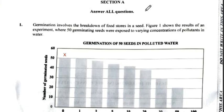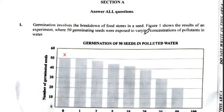In question 1, it says germination involves the breakdown of food stores in a seed. Figure 1 shows the results of an experiment where 50 germinating seeds were exposed to varying concentrations of pollutants in water — so we're looking at the germination of 50 seeds in polluted water.